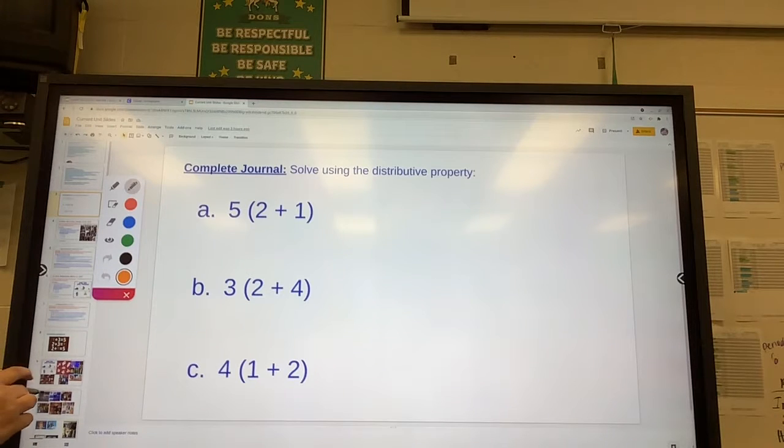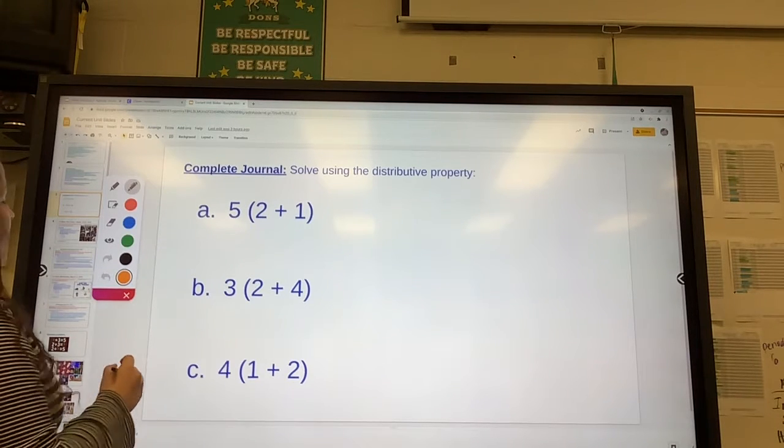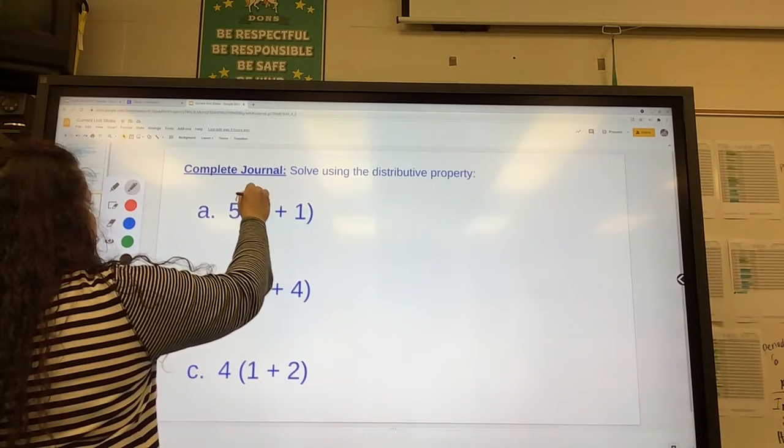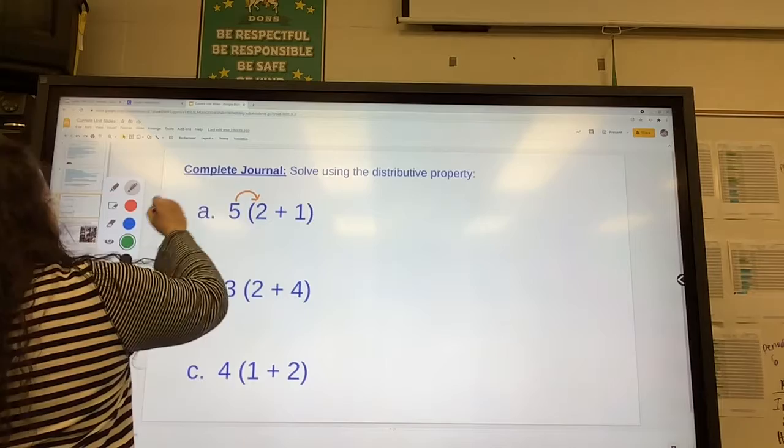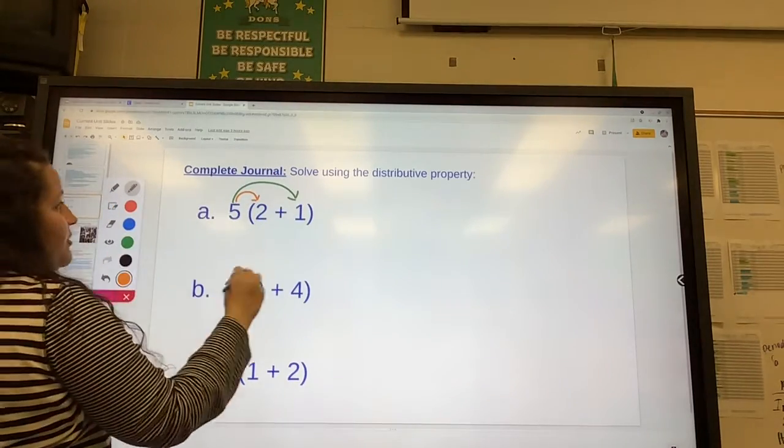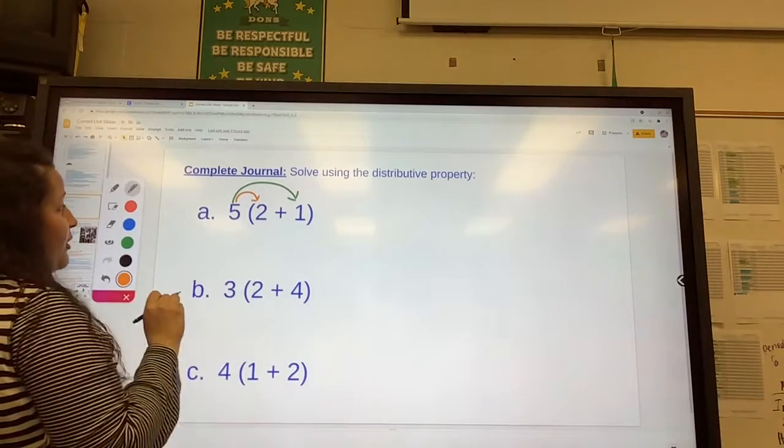We're going to solve these problems using the distributive property. Remember the distributive property says that you can multiply the outside term by both numbers inside, and then you'll get the same answer as if you solved inside the parentheses first.